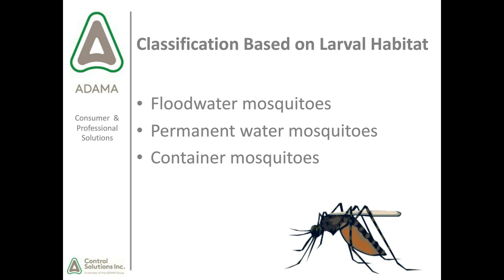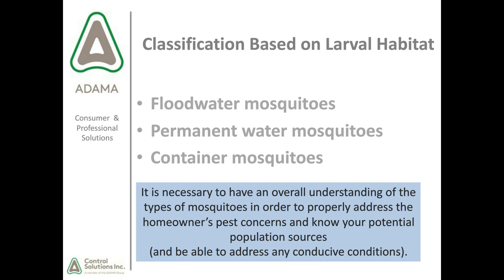Mosquitoes are classified based on three types of larval habitats: floodwater mosquitoes, permanent water mosquitoes, and container mosquitoes, with multiple species active in each habitat type. Understanding these types is necessary to properly address homeowner pest concerns, know potential population sources, and address conducive conditions. It's important to be aware not just of the property being treated, but surrounding areas that could be breeding mosquitoes and infiltrating the target property.